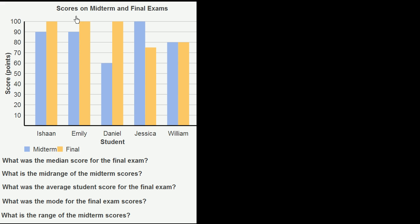In this chart, we're given scores on midterm and final exams, where the vertical axis is the score in points. Each pair of bars represents an individual student. The blue bar shows the midterm score, for example how Ishan did on the midterm. The yellow shows the final score. For Emily, blue is her midterm, yellow is her final. We have several interesting questions to answer.